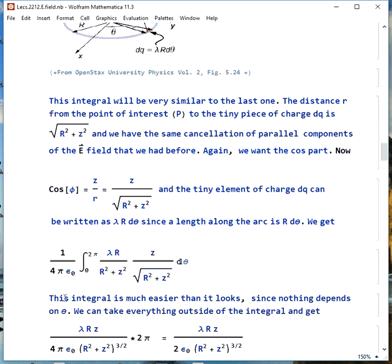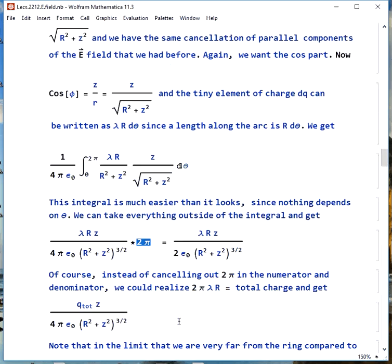We rewrite this and get 1 over 4π epsilon naught. We integrate from 0 to 2π over theta, and we have lambda r over r squared plus z squared times z over square root of r squared plus z squared. This doesn't look fun, but it turns out it's almost trivial, because nothing in this integral depends on theta. It can all go outside, and the theta integral just gives us 2π. When we work it all out, we get lambda r z over 2 epsilon naught times r squared plus z squared to the 1.5.